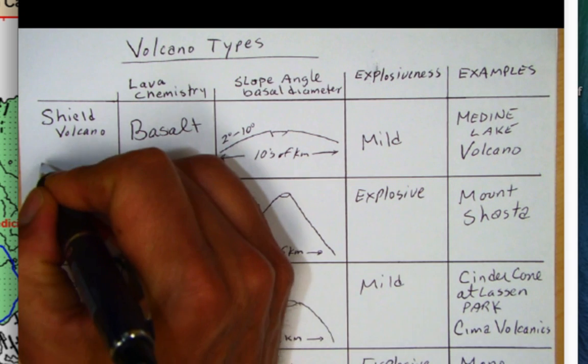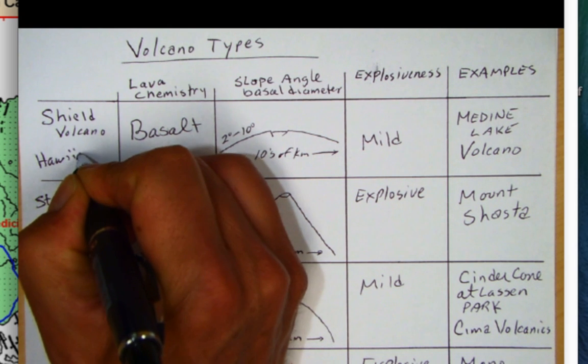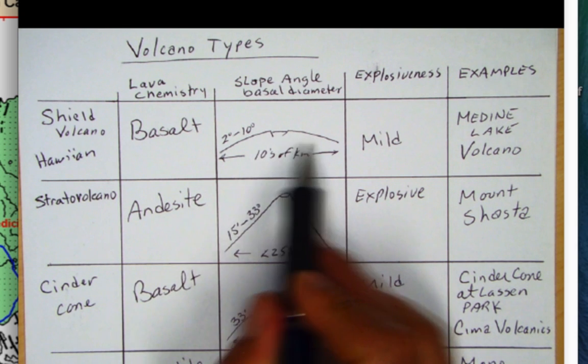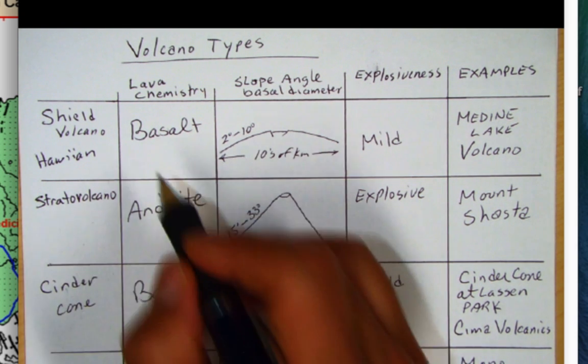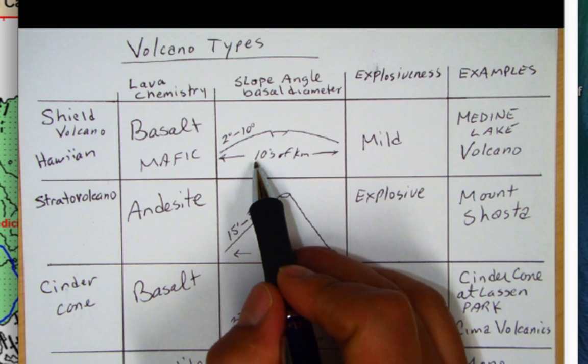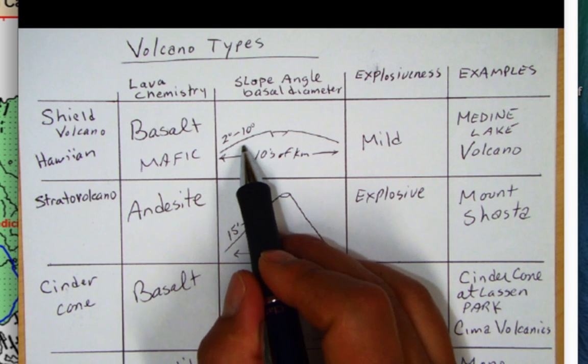So shield volcano, these are also known as Hawaiian type because Hawaiian volcanoes are classic shield volcanoes. They're very broad basalt lava chemistry, MAFIC. Their basal diameter is tens to a hundred kilometers in diameter so they're quite wide with a shallow slope angle.